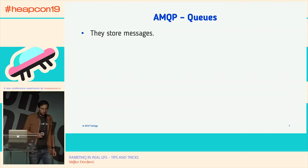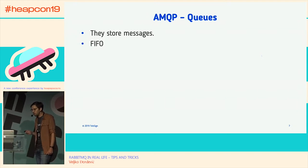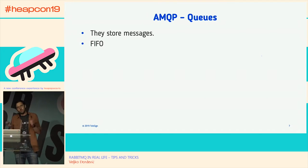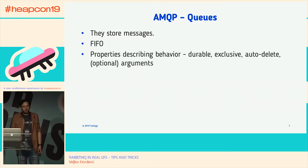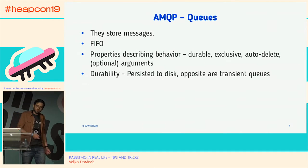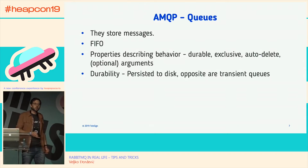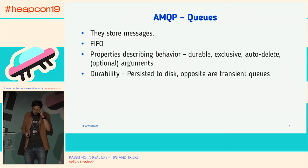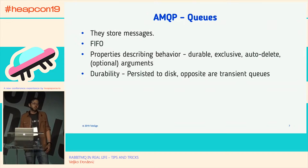Queues store messages — it's all about queuing here. We enqueue and dequeue in FIFO manner, although in some cases with RabbitMQ that can change with priority queues. Their behavior is described by several properties, like durability, which instructs the broker to save the message to disk so the message will survive if the broker restarts.